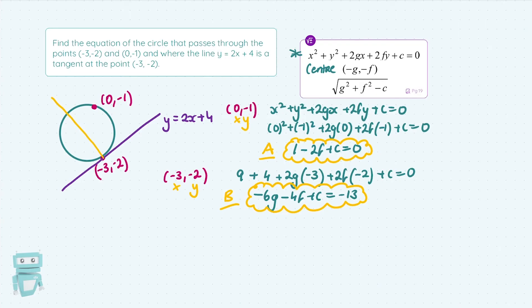So, a line perpendicular to the tangent contains the center. And the center, when we're using this equation x² + y² + 2Gx + 2Fy + C = 0, is written in the form (-G,-F). Now, we want to sub in (-G,-F) into a line. I can't just sub it into y = 2x + 4 because it's not on that purple line.